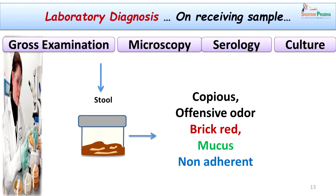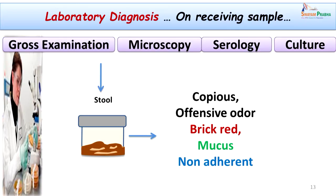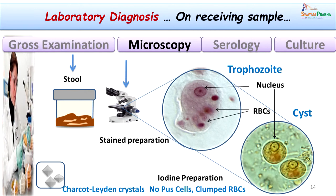On gross examination, the specimen was brick red, offensive in odor, mixed with mucus flakes, and non-adherent to the container. All these points help differentiate it from bacterial dysentery, in which these findings are slightly different.